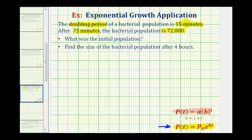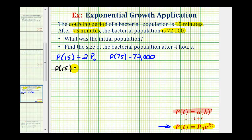Going back to the given information: if the doubling period is 15 minutes and p sub zero is the initial amount, this tells us that p of 15 must equal two times p sub zero. We're also told that after 75 minutes the population is 72,000, which means p of 75 must equal 72,000. Starting with the information about the doubling time, if p of 15 equals two times p sub zero, then two times p sub zero must equal p sub zero times e raised to the power of kt, and since t is 15, the exponent is 15k.